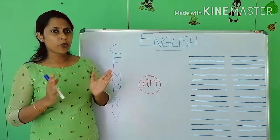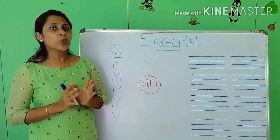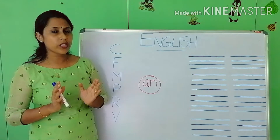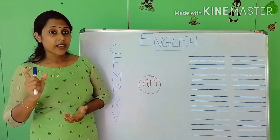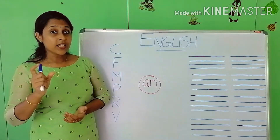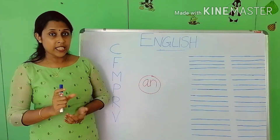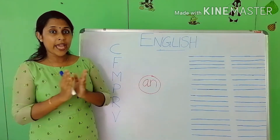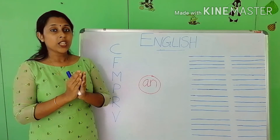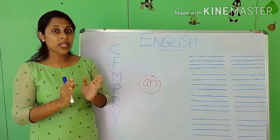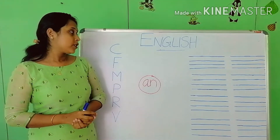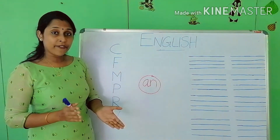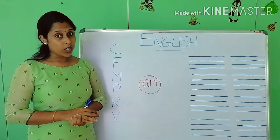Which letters are put together to make this sound 'at'? A and T together make the sound 'at'. So we learned 'at' family words.